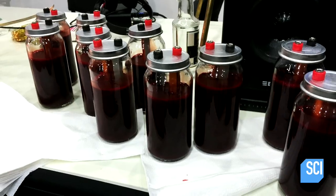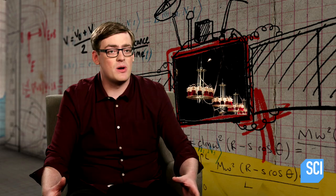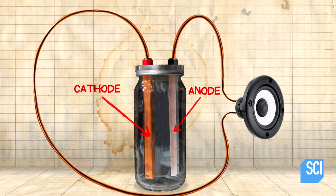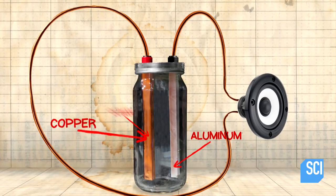That's an entire body worth of blood and this is what he's put into his battery containers. Batteries contain two electrodes, a cathode and an anode. He's using an aluminum electrode and a copper electrode.